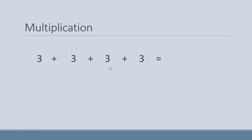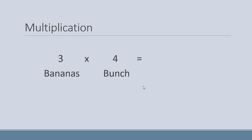Now nine plus three — we get ten, eleven, twelve. The answer is twelve. We can also write it as three multiply four, because we have three four times. Hamare paas three bananas hain aur four bunches hain, toh hum is ko three multiply four bhi likh sakte hain.